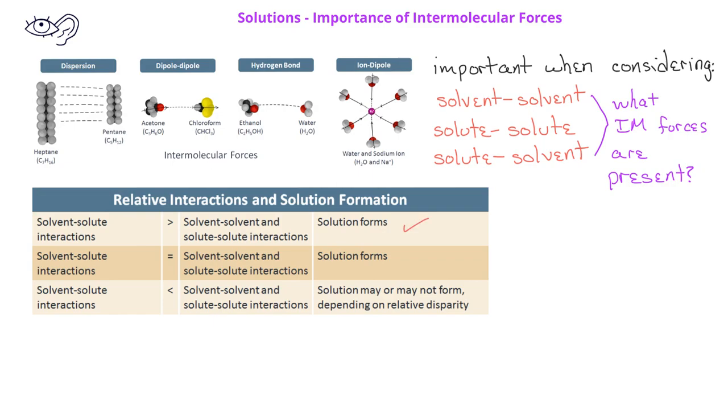If the solvent-solute interactions are of about equal magnitude to the solvent-solvent and the solute-solute interactions, we can still predict that a solution will form. However, if the solvent-solute interactions are much weaker than the solvent-solvent and solute-solute interactions, we may get a solution to form or we may not. It will really depend on the relative difference in strengths between these two types of interactions.